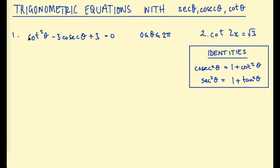Starting with this first problem, we have cotangent squared minus 3 cosecant plus 3 equals 0, and we're looking for theta between 0 and 2π. We've looked at equations like this with sine and cosine, so when you have two different functions, it's often good to see if you can write one function in terms of the other. We're going to use one of these identities to write cotangent squared in terms of cosecant, giving us a quadratic in cosecant.